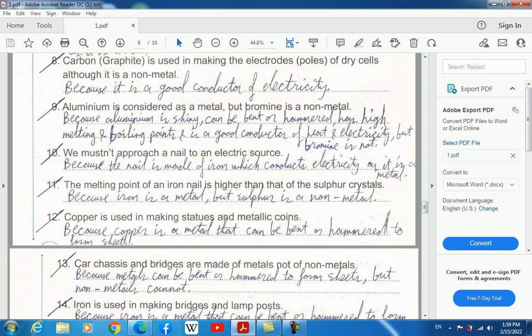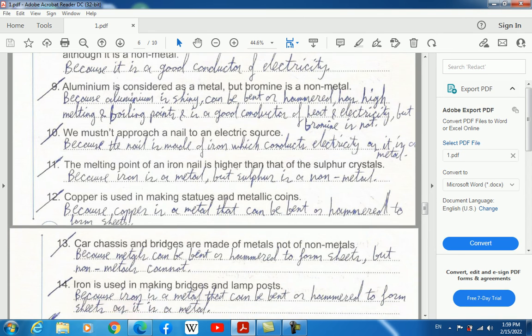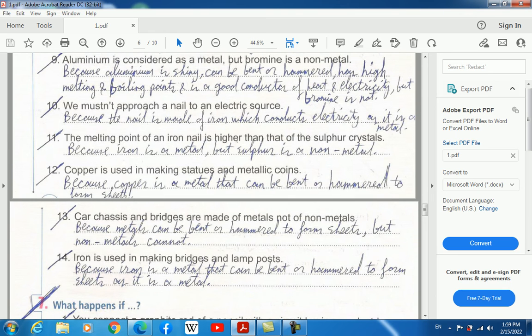Eight, carbon which is graphite is used in making the electrodes, the poles of dry cells, although it's a non-metal because it's a good conductor of electricity. Nine, aluminum is considered a metal but bromine is a non-metal because aluminum is shiny, can be bent or hammered, has high melting and boiling points, and is a good conductor of heat and electricity, but bromine is not.